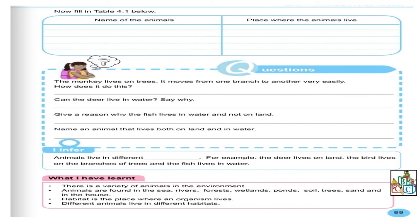Continuons. Animals live in different blank. For example, the deer lives on land. The bird lives on the branches of trees. And the fish lives in water. Notez. Toujours, notez toutes les idées que vous avez eues dans votre cahier. Et dès que ce sera possible, on va utiliser toutes vos idées, faire un discuss et afin de pouvoir avoir les réponses.